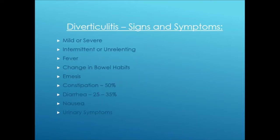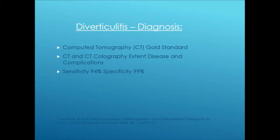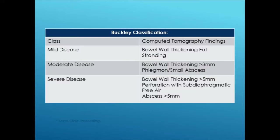Signs and symptoms of diverticulitis can be mild or severe, intermittent or unrelenting — fever, change in bowel habits, emesis, constipation, diarrhea, nausea, and urinary symptoms. The differential includes ulcerative colitis, Crohn's, ischemic colitis — where someone has constipation, severe lower abdominal pain, then passes blood and develops bloody diarrhea — appendicitis, and irritable bowel syndrome. The gold standard to diagnose diverticulitis is CT scan of the abdomen, with sensitivity of about 94% and specificity of about 99%.